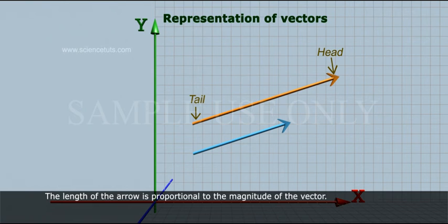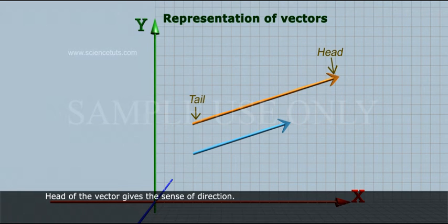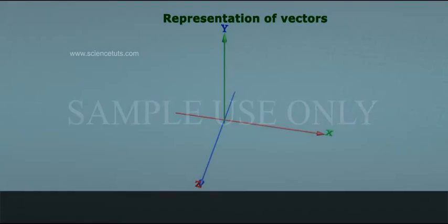The length of the arrow is proportional to the magnitude of the vector. The head of the vector gives the sense of direction.